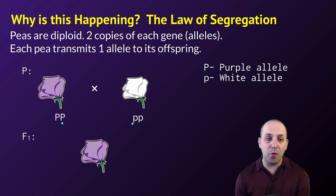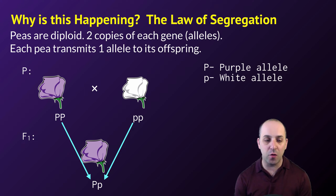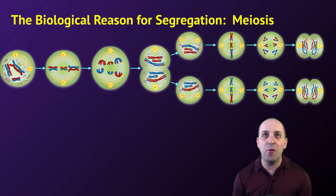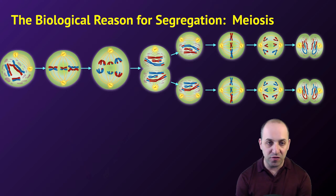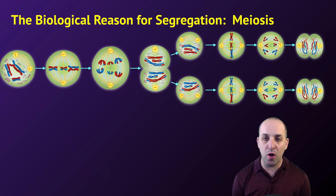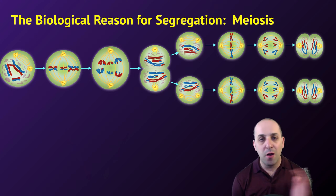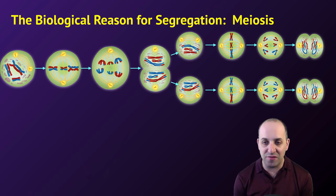Peas are diploid, but each parent only transmits one allele to its offspring. So the purple parent gives a big P allele and the white parent gives a little p allele, making the F1 big P, little p. Why do we only give one copy of each? From our understanding of meiosis, during meiosis we only transmit one of each chromosome to the gametes — one member of the homologous pair gets transmitted. So meiosis is why segregation happens. Mendel didn't know that, but we know this is the case now.